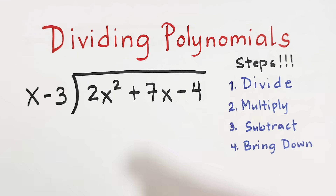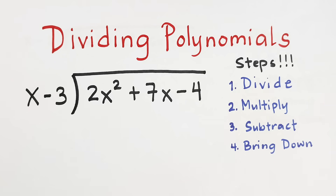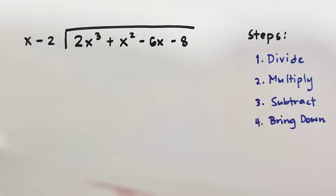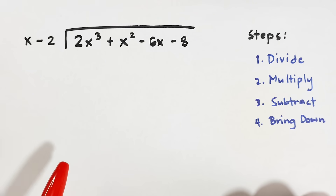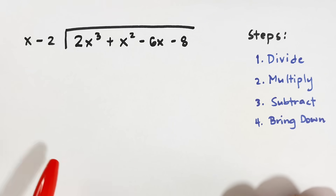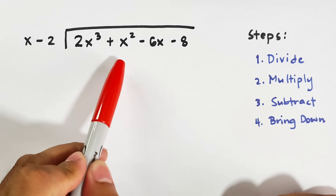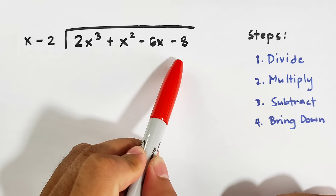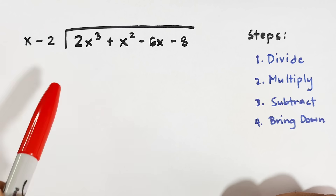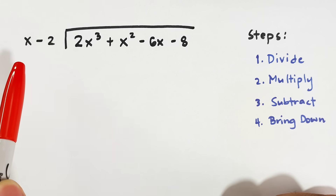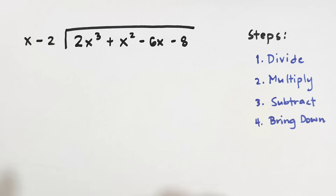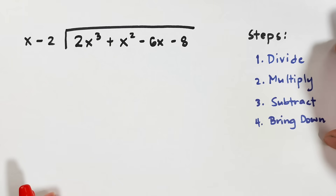Hi guys, it's me Teacher. In today's video we will talk about dividing polynomials using long division. So without further ado, let's do this topic. Our first example is 2x cubed plus x squared minus 6x minus 8 as the dividend, to be divided by the divisor x minus 2.